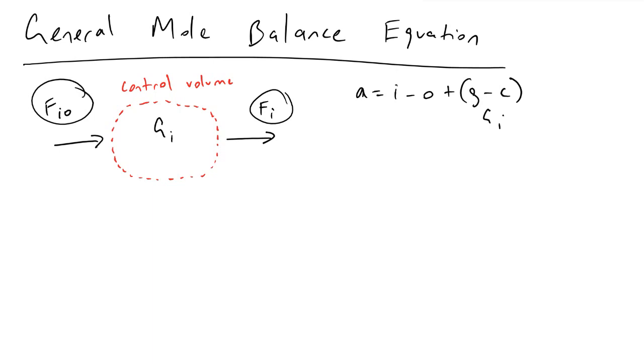The accumulation within our control volume is the change in the number of moles of i, dn_i/dt, which equals the number of moles coming into our reactor, f_i0, minus whatever's coming out, f_i, plus the generation term g_i within our reactor.